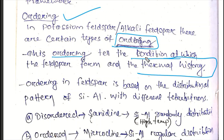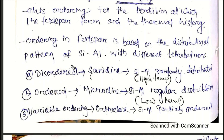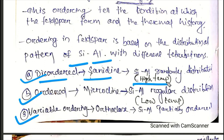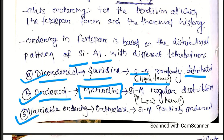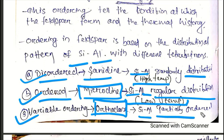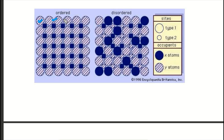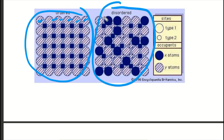The thermal history and temperature change determine the ordering condition. The ordering means the Si or Al distribution is ordered or disordered. What is disordered? Sanidine — high temperature — means Si and Al are randomly distributed. What is ordered? Microcline mineral is ordered, meaning Si and Al are in regular distribution at low temperature. Orthoclase is intermediate — Si and Al are partially ordered.